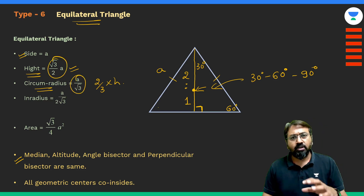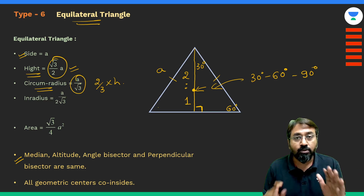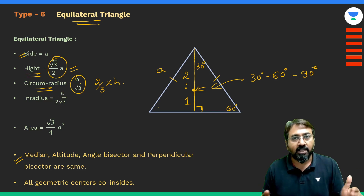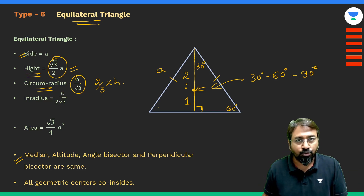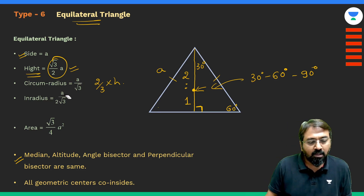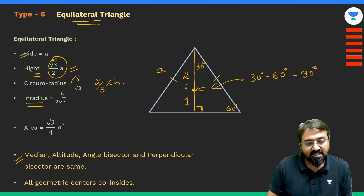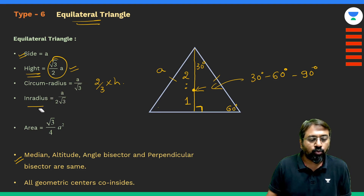Instead of just memorizing this formula, you can derive it as I've shown you, and then you will be able to easily remember it. The inradius is half of the circumradius, so if the circumradius is a/√3, then the inradius is going to be a/(2√3).